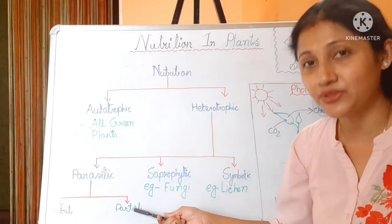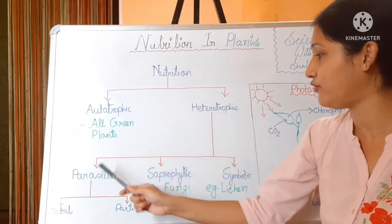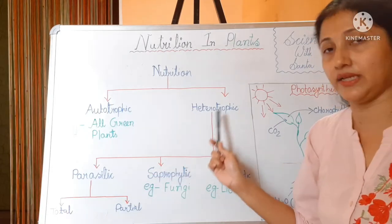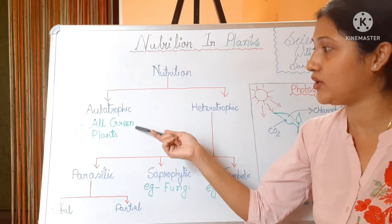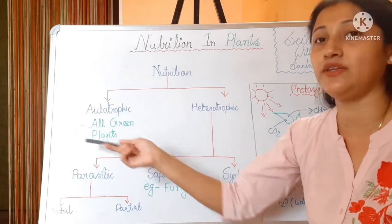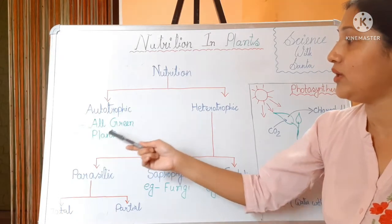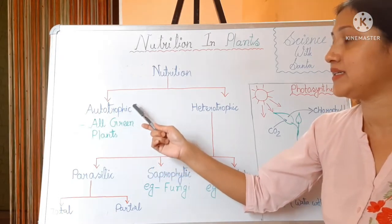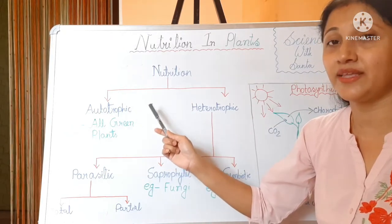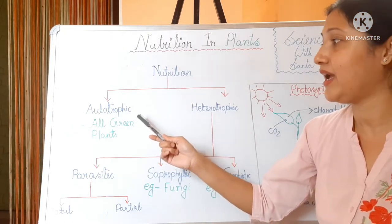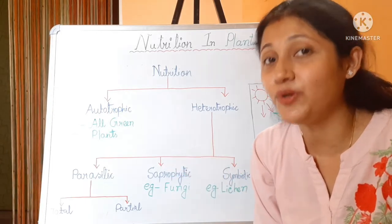Now, dear students, we will discuss heterotrophic nutrition in our next class. In this class, we are focusing on autotrophic nutrition. As we all know, all the green plants make their own food by a process which is called photosynthesis.